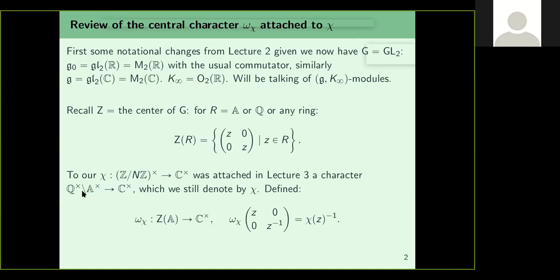To our chi, which was a Dirichlet character on (Z/nZ)*, we attached a character of the idele class group A* mod Q*, also denoted by chi. Note there is a typo: Z(R) should be the set of all scalar matrices z·I with z in R*, not R, because we want invertible matrices.